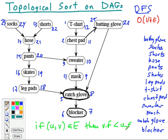This seems counterintuitive — if the link says you've got to do U before V, why would we want U's finishing time to be later? Remember that this list was in reverse order: it was a linked list and we were pushing things onto the top. So for example, batting glove has the last finish time but it's the first one on the list — the thing we've got to do first. So if we show that for any link from U to V the finish time of V is less than the finish time of U, this produces a correct topological sort.